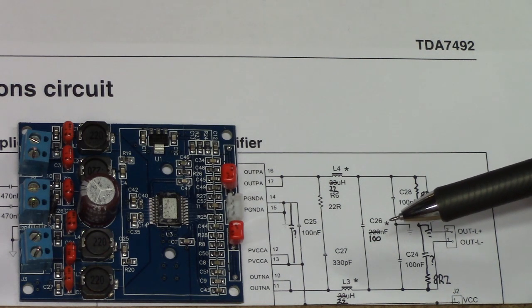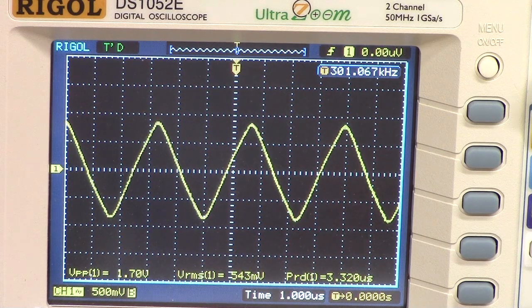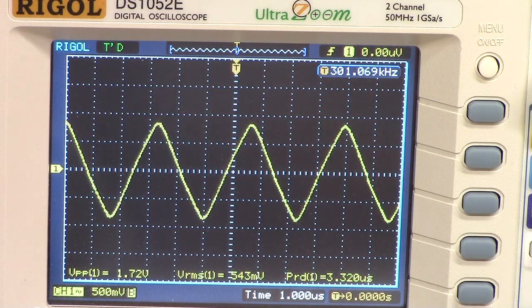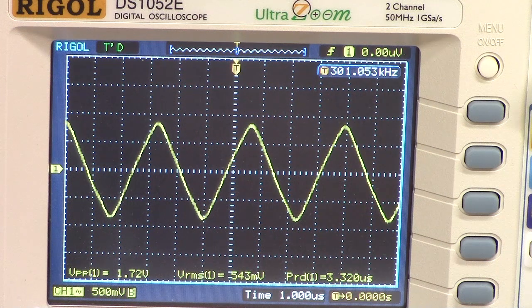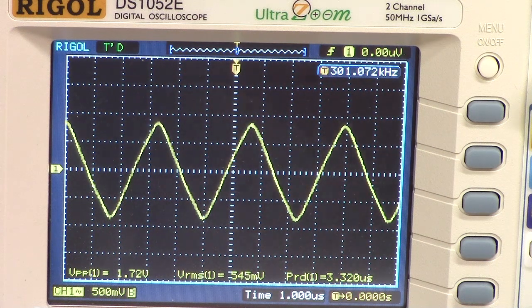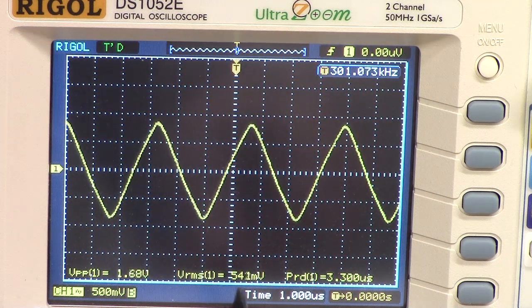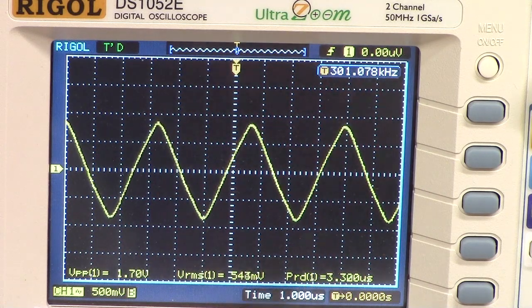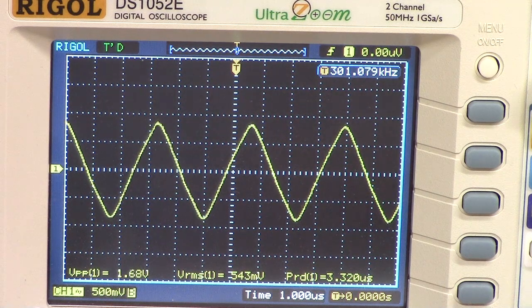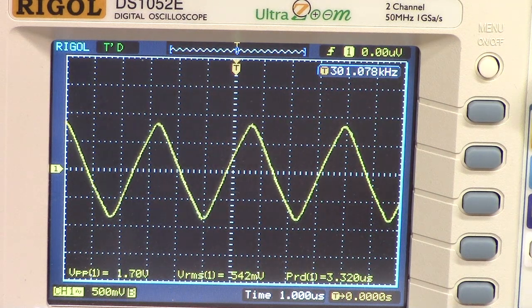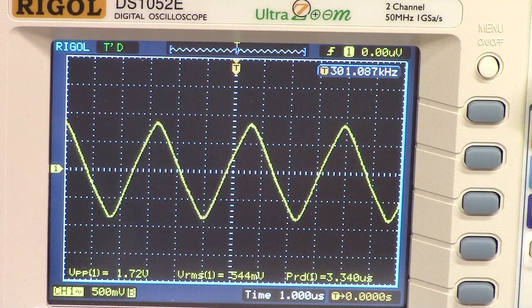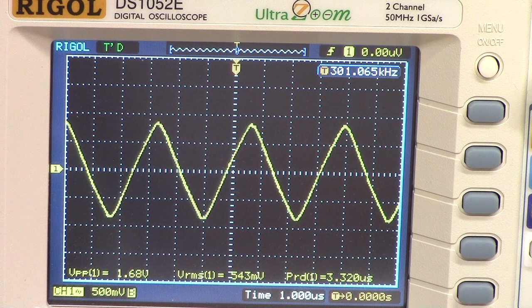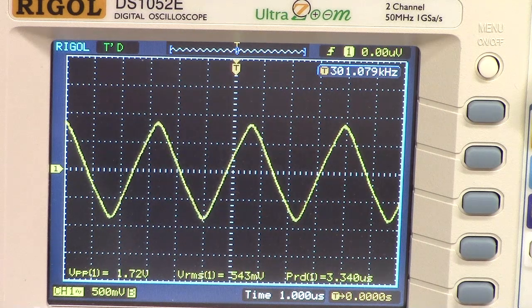Just for reference, prior to touching anything, here's what the no signal input charted output of the amplifier looks like. We've got 540 millivolts of noise at 300 kilohertz, which is obviously the switching frequency of the amplifier. This is not something you're going to hear but this is going to translate into heat being produced in the amplifier since this is a voltage being pushed through your speakers and it's just going to be a general detriment to the performance of the device.